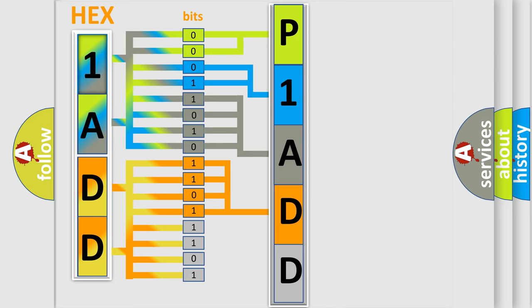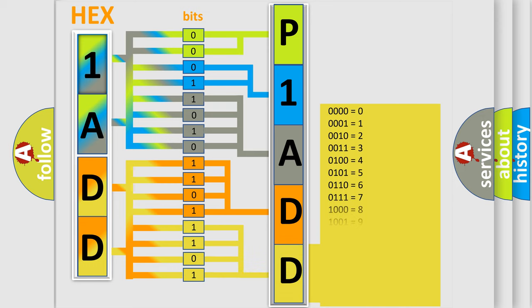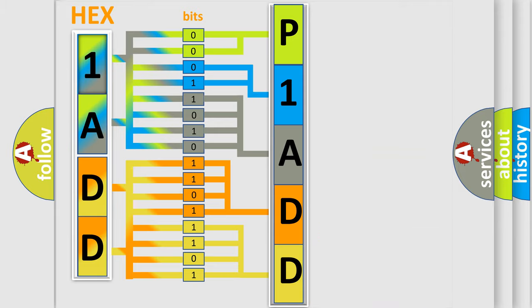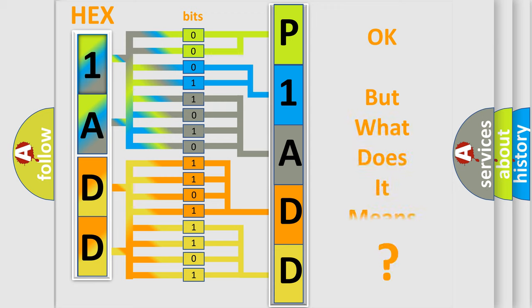A single byte conceals 256 possible combinations. We now know in what way the diagnostic tool translates the received information into a more comprehensible format. The number itself does not make sense to us if we cannot assign information about what it actually expresses.